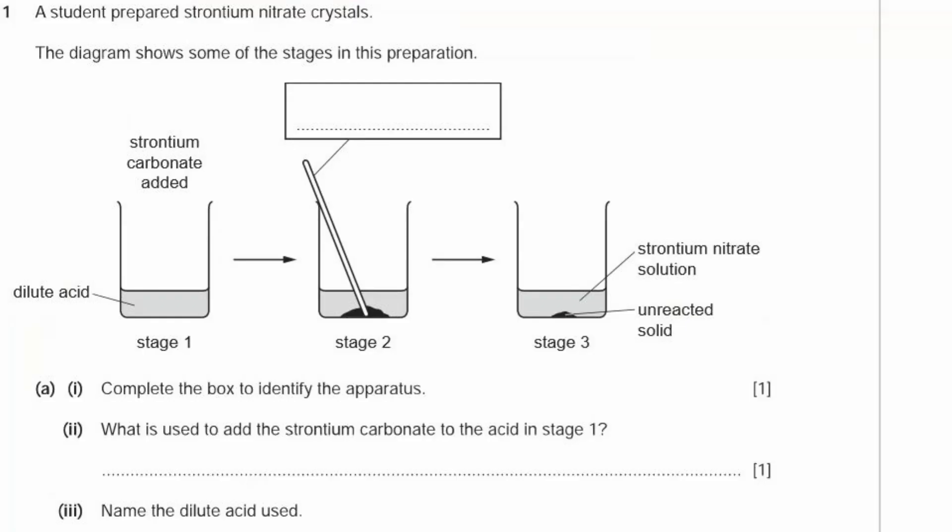Question 1. A student prepared strontium nitrate crystals. The diagram shows some of the stages of this preparation. They started off with dilute acid, added strontium carbonate solid, and mixed it up. At the end, there was unreacted solid and strontium nitrate solution. Complete the box to identify the apparatus. So this is a glass rod. You can also call it a stirrer.